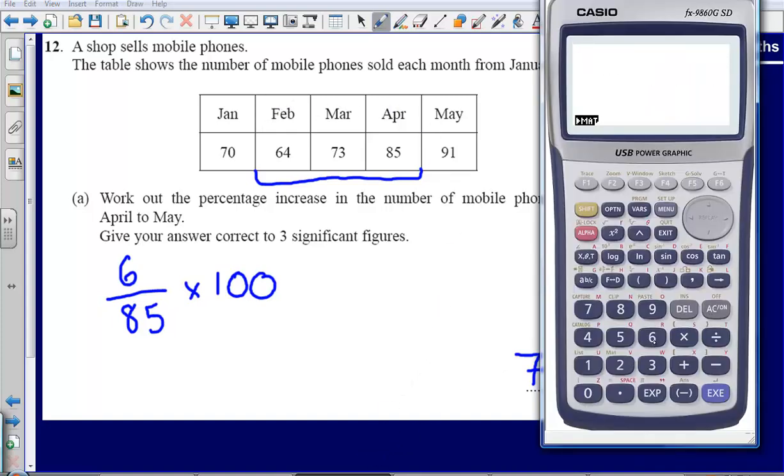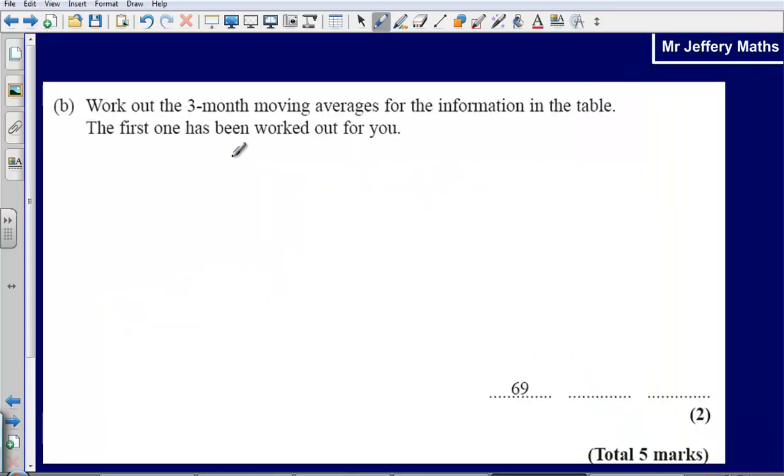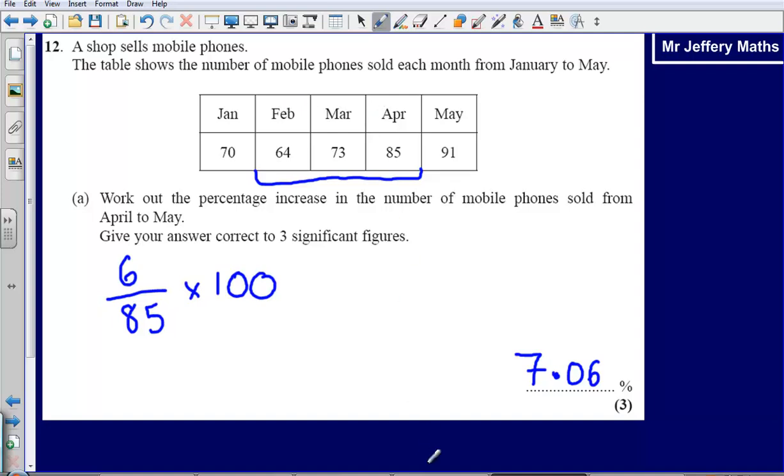So let's do that. 64 plus 73 plus 85 divided by 3, that gives us 74. So 74 is the average for February, March, and April.